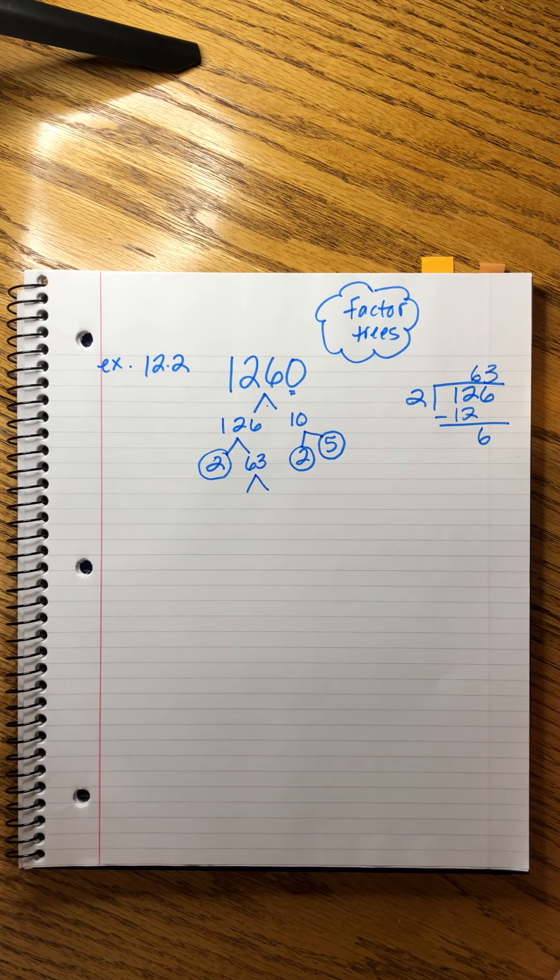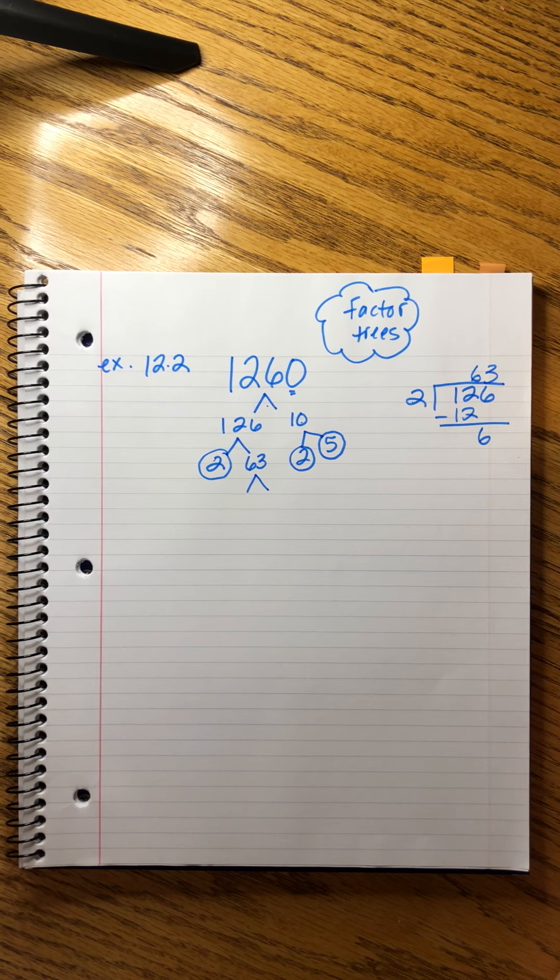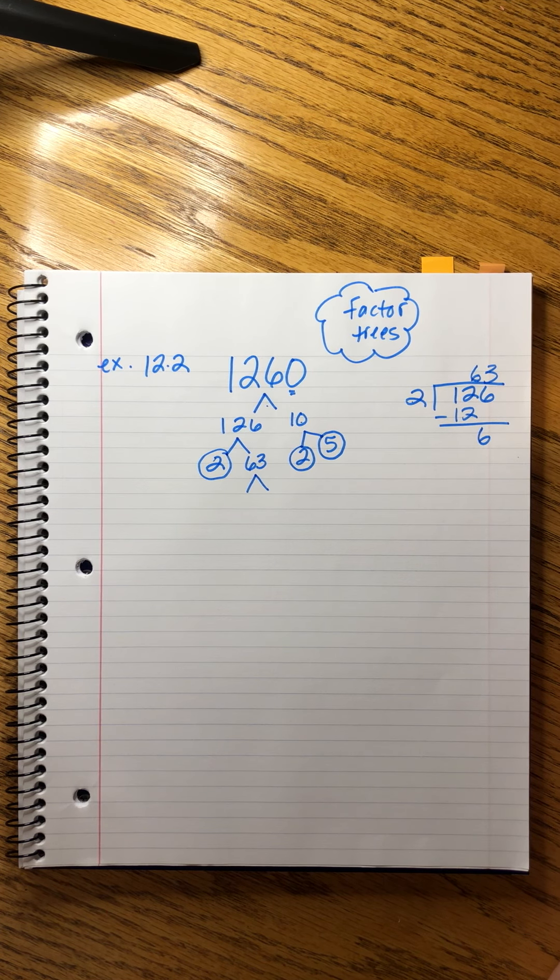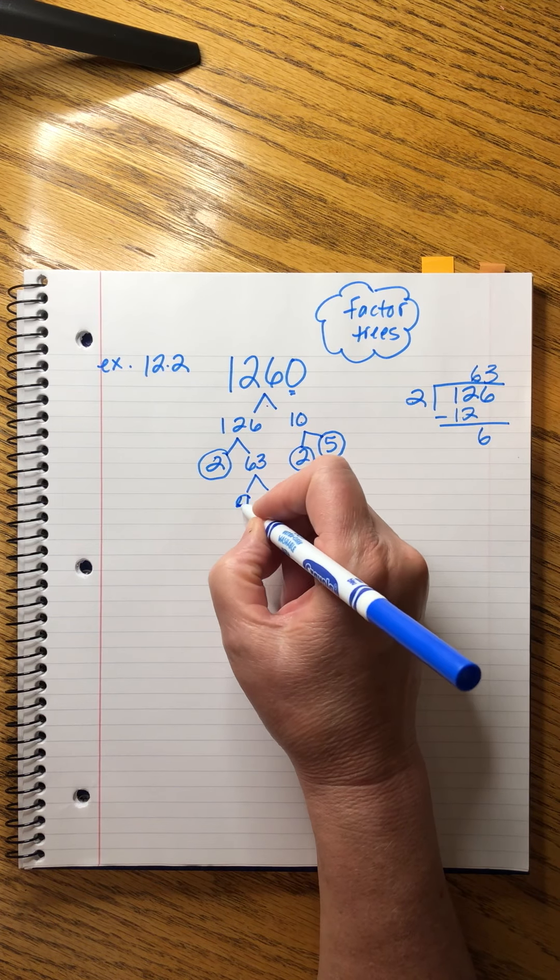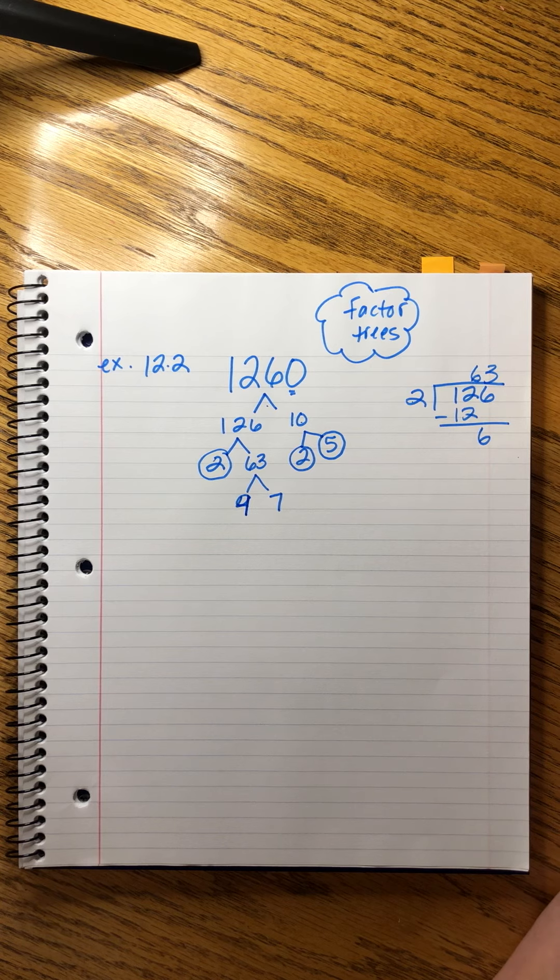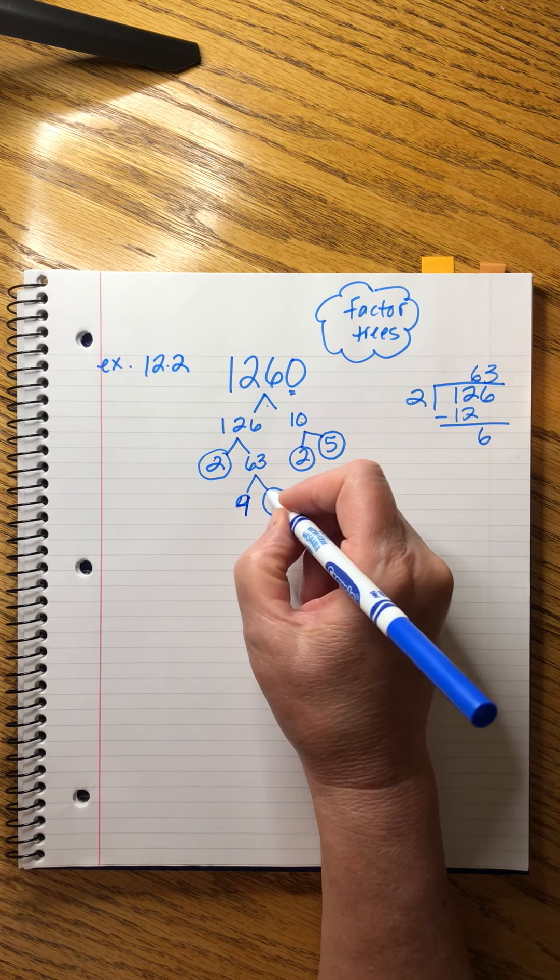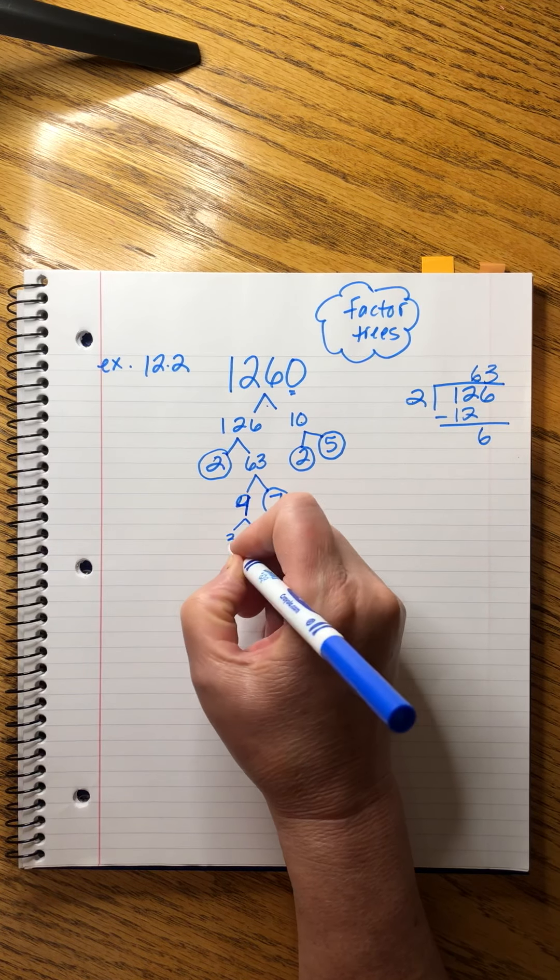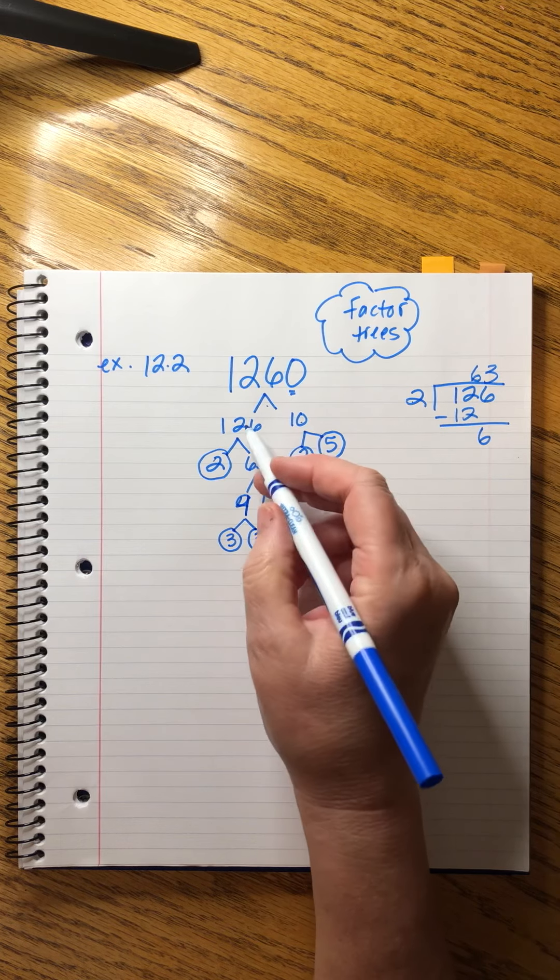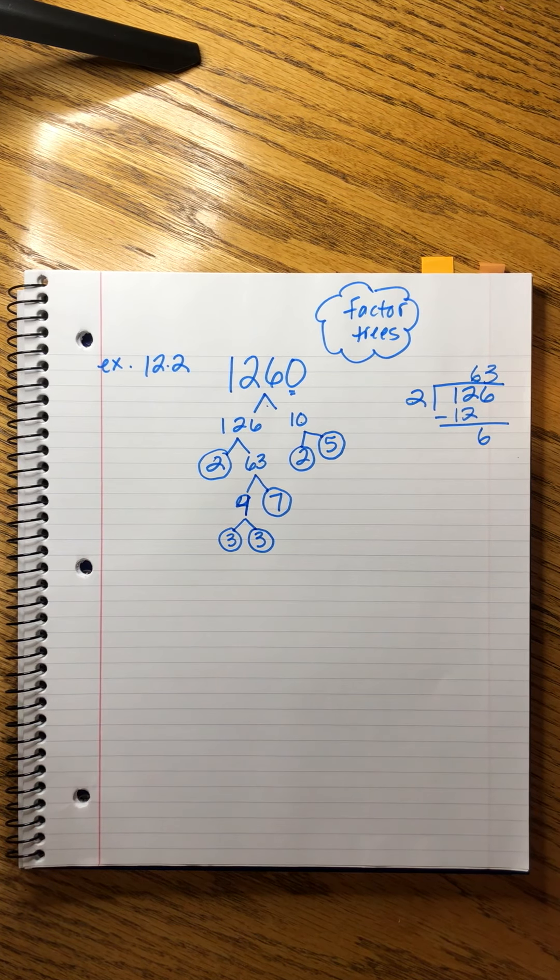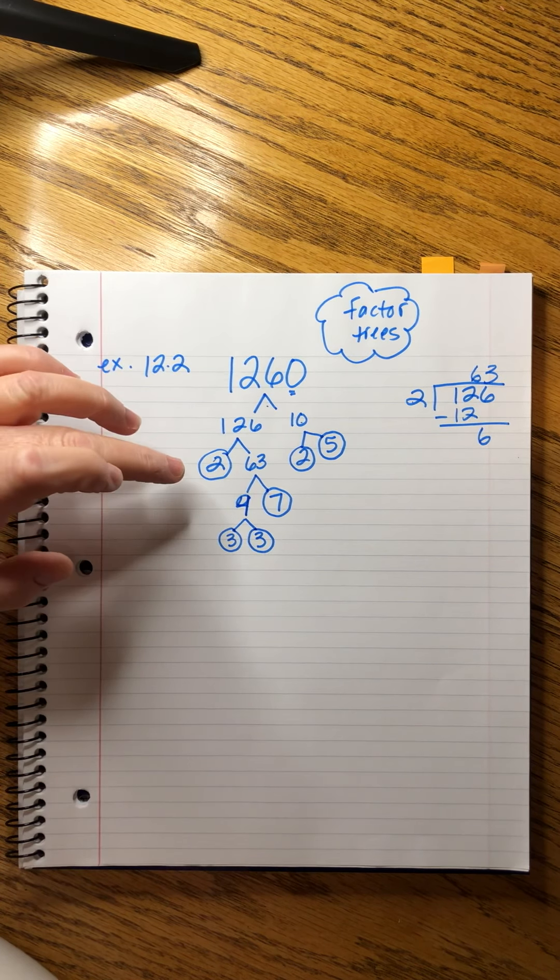I've broken this number down. Two is prime so we can circle it, we're done. What about 63? Can you think of any two numbers that multiply together to get 63? If you were with me in the room I'd be making you do all the heavy lifting here, but I'll give you the answer. I can tell you right now that 63 is—it's nine times seven. So once again I ask myself, is either of these numbers prime? Yes, seven is, I circle it. Nine is not prime, nine's composite, so I can do three times three.